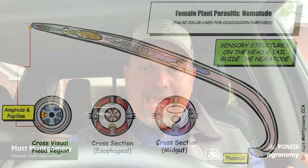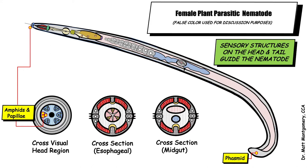How does a nematode find its food source in the soil when there's no light, nothing for it to visually sense where the root is? There are little sensory organs on the head and the tail that act like heat-seeking missiles, actually detecting gases and root exudates being released. That allows the nematode to figure out in the soil profile where the root is and hone in on it. One of the ways we knock out certain corn nematode species with certain plants — like mustards and brassicas — is that we knock out those sensory structures, leaving the nematode blind. It wanders aimlessly, can't find the root, and starves to death. That's how some nematicide-like products work.